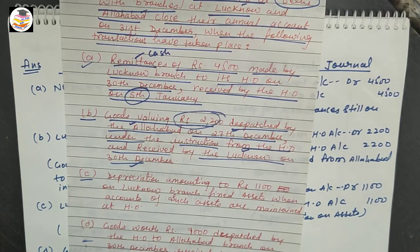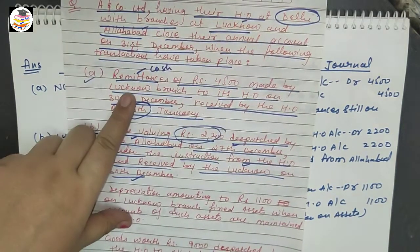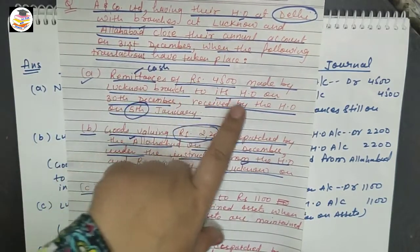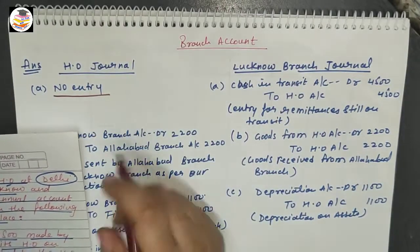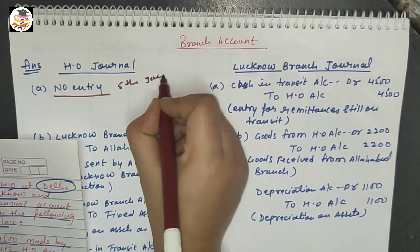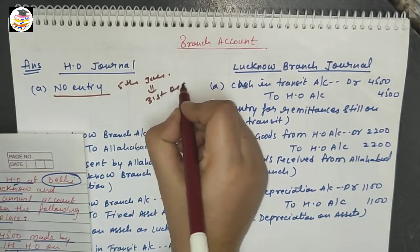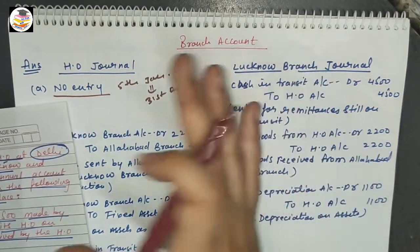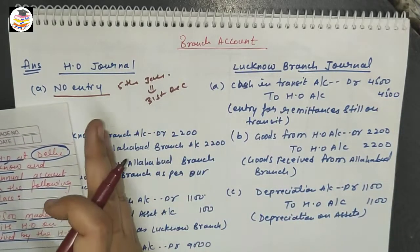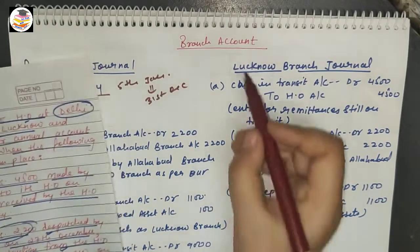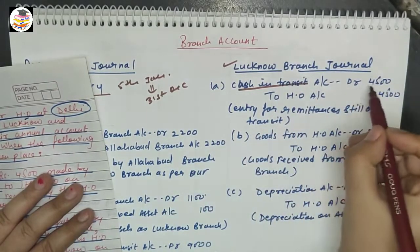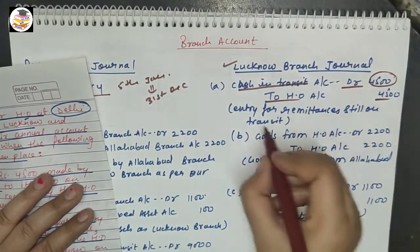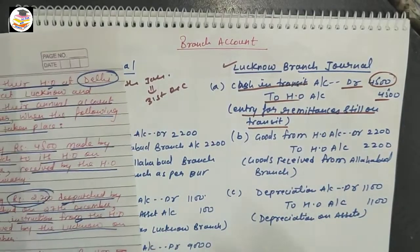For the first transaction — remittance of Rs. 4,500 sent by Lucknow branch — since the head office received it on 5th January, we will not pass the entry in the head office journal. Instead, the entry in Lucknow branch books is: Cash in Transit Account debit 4,500, To Head Office Account 4,500, being remittance still in transit.